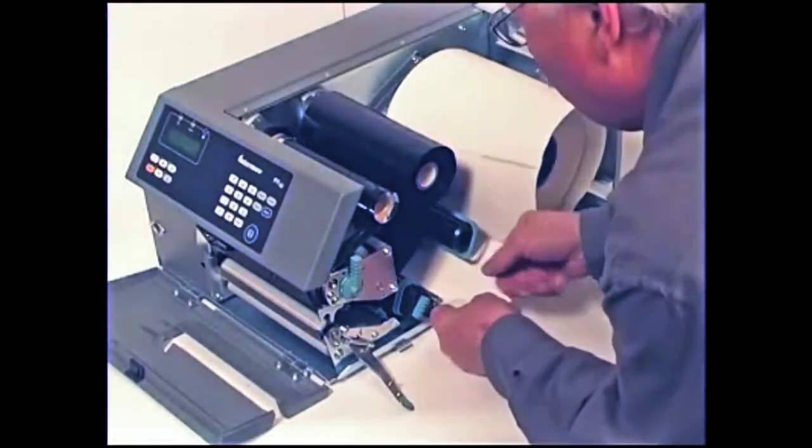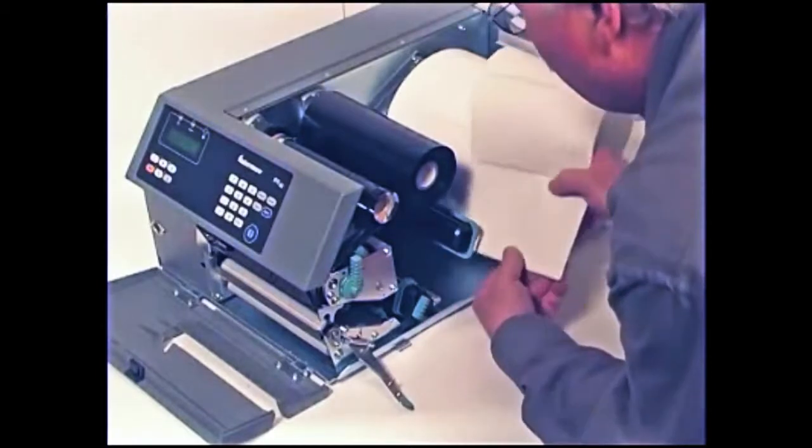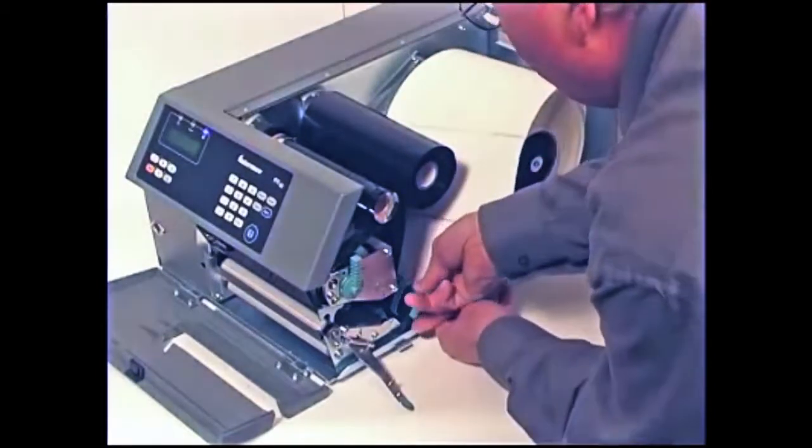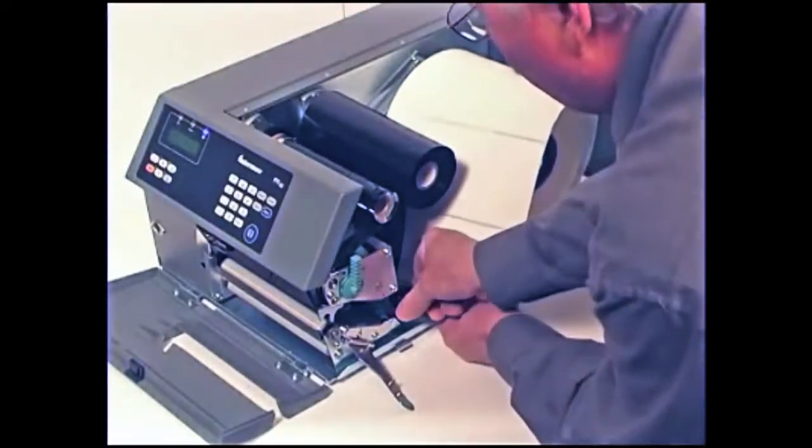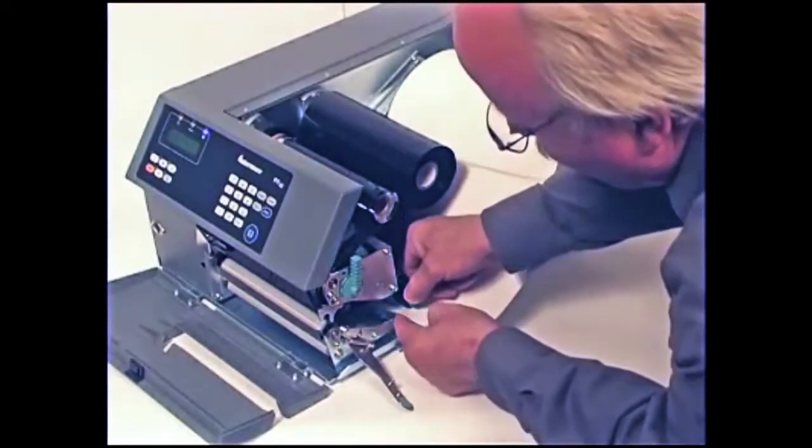Route the media under the slack absorber and forward toward the print mechanism. The slack absorber can be rotated for better access and then snap-locked in the open position.